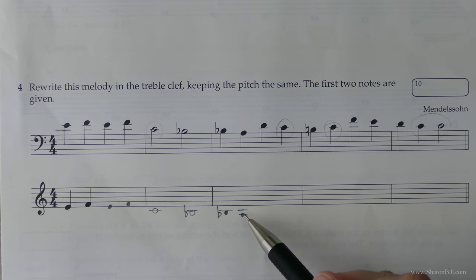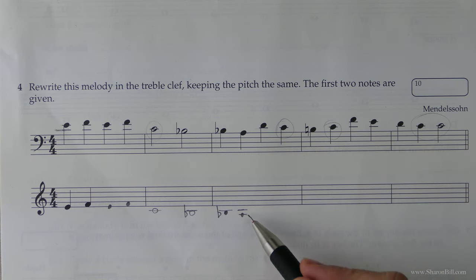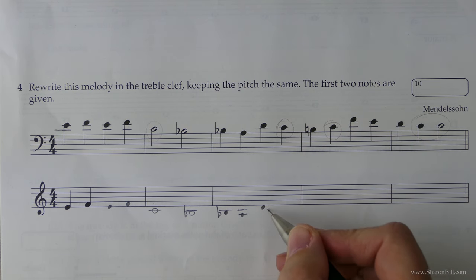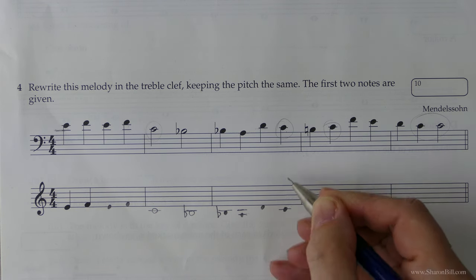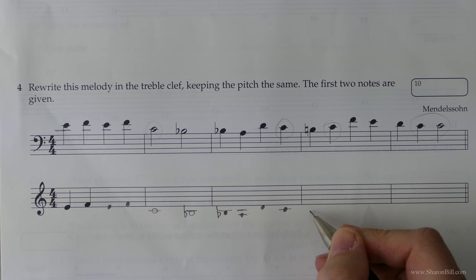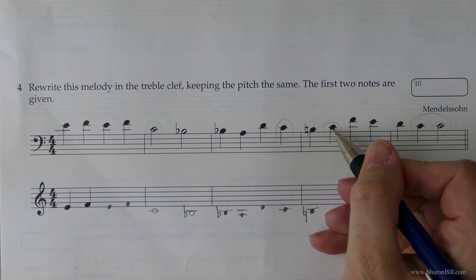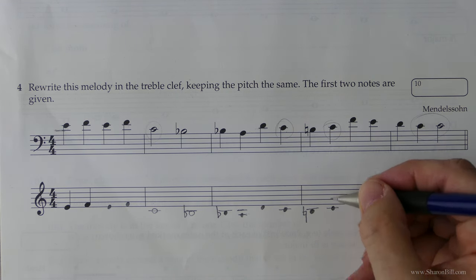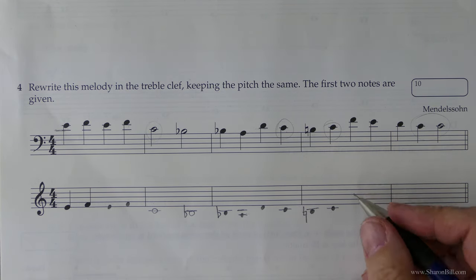So now we're going to go up — counting one, two, three, four, one, two, three, four — and that should be the D above middle C, which it is. Down a step which should take us to middle C, which it does. Down another step takes us below that ledger line. Now they've included the natural sign so we shall do likewise. Up a step takes us to middle C again. I'm trying to keep reasonably aligned with their note heads, keep the blob aligned so I don't lose track of where I am.